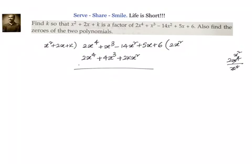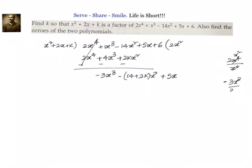Now we subtract, changing the signs. 2x to the power of 4 cancels. We are left with 1 minus 4, which is minus 3x cubed, then minus 14 plus 2k into x squared. We bring down the next term 5x. Now dividing minus 3x cubed by x squared gives minus 3x. Multiplying: minus 3x times x squared is minus 3x cubed, minus 3x times 2 is minus 6x squared.